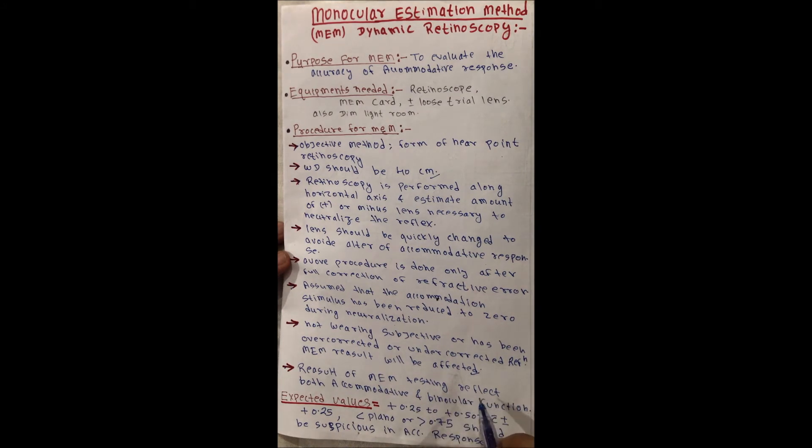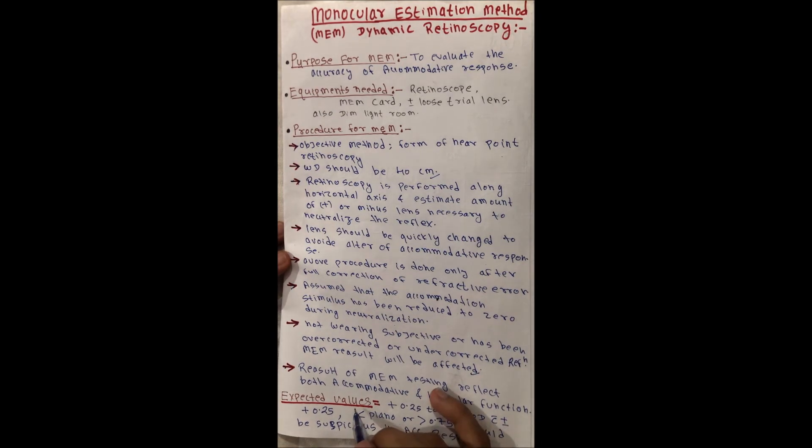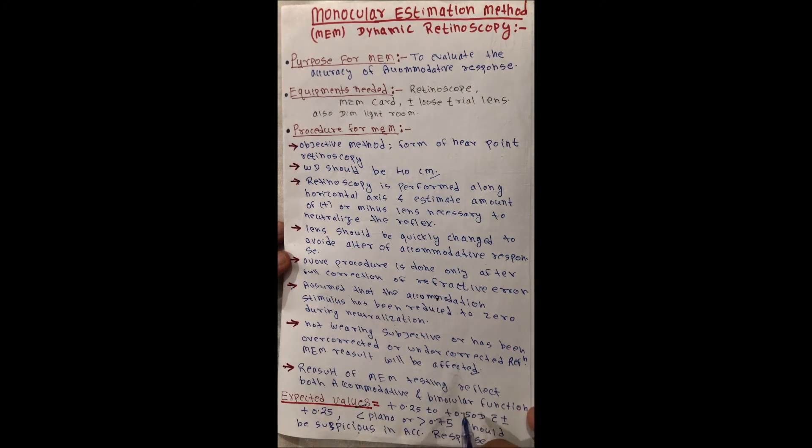The result of MEM testing reflects both accommodative and binocular function, because it may be influenced by positive or negative vergences. It is a binocular testing method. Expected values of MEM are plus 0.25 to plus 0.5 diopter with the standard deviation of plus 0.25.